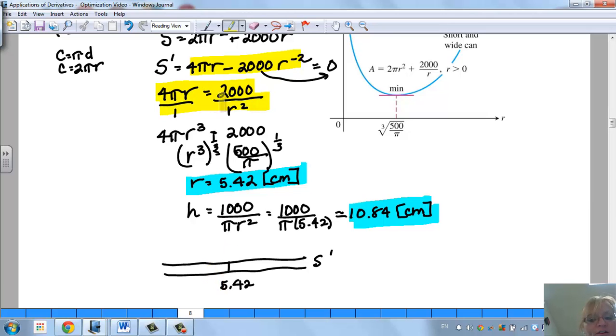So if I go to the left of 5 and I plug it back into this, you're going to notice that I get negative numbers. If I go to the right, we'll say 6 or 7, if I plug that in here, I'm going to get positive numbers. So this does show you that this is a min, so we did it correctly.